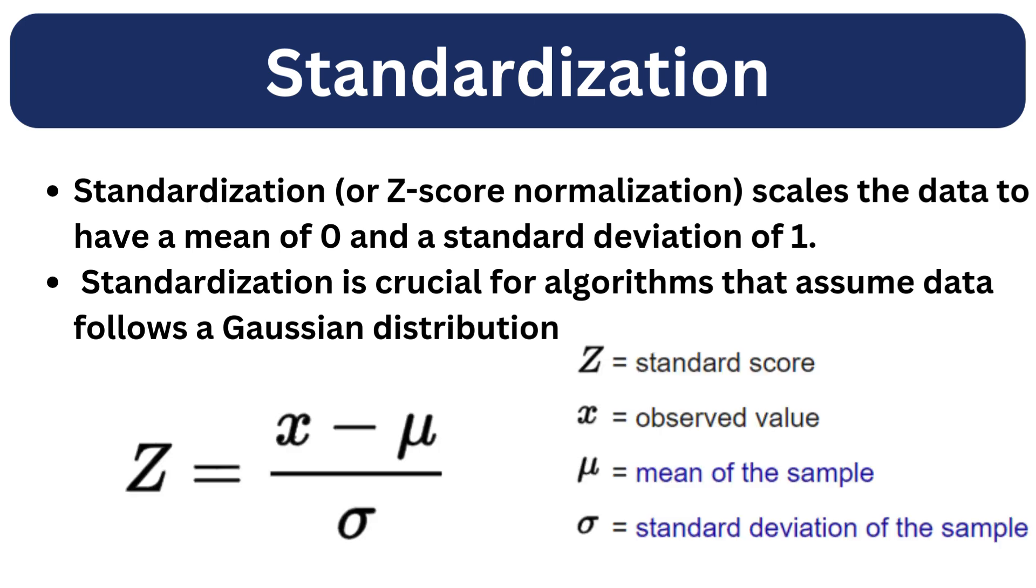Here is the formula for standardization, and we have also seen the same formula when we were dealing with outliers using the z-score method. This is the same formula, but the purpose of usage is different. We minus the mean of the feature from each data point and then divide by the standard deviation.